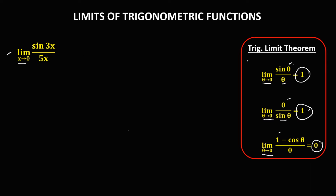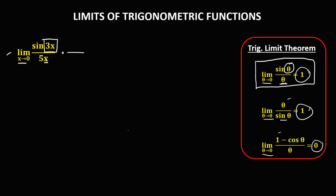For the first given — the limit of sine 3x over 5x as x approaches 0 — we'll use the trigonometric limit theorem. Observe that the denominator must equal the angle. Since the angle is 3x, we need 3x in the denominator. To make that happen, since we have 5x, we just need to multiply both sides by 3.